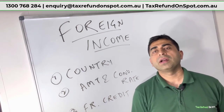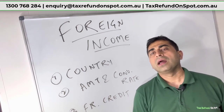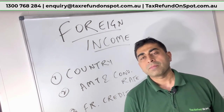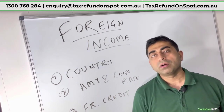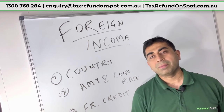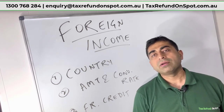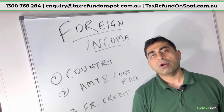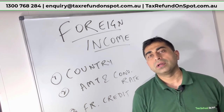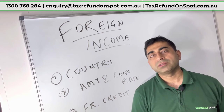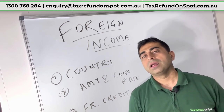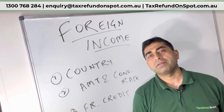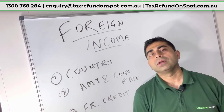For example, if you received a dividend in New Zealand or another country along with a franking credit, that amount must also be included. Make sure you include your foreign income — the ATO is very strict. There is no exemption and no concession. If you have any problems, give us a call or register on our website and we will help you. Thanks for watching.